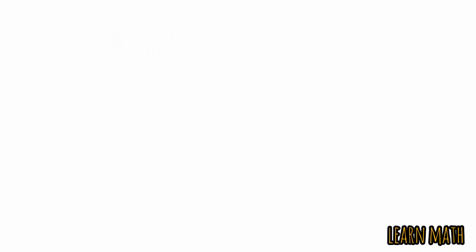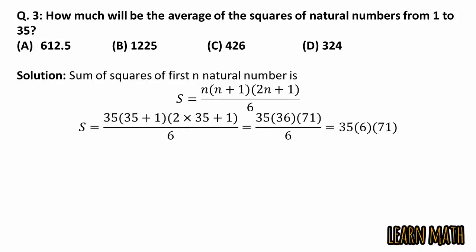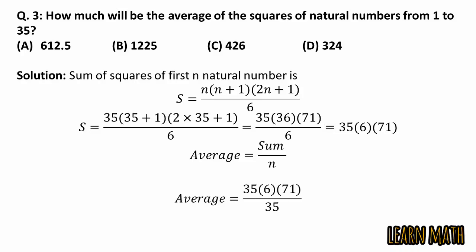The third question is: how much will be the average of squares of natural numbers from 1 to 35? These are the 4 options. We know the sum of squares of first n natural numbers is n(n+1)(2n+1)/6. Putting n = 35, the average equals the sum divided by n. Cancelling 35 with 35, we get 6 × 71 = 426. The correct option is option C.